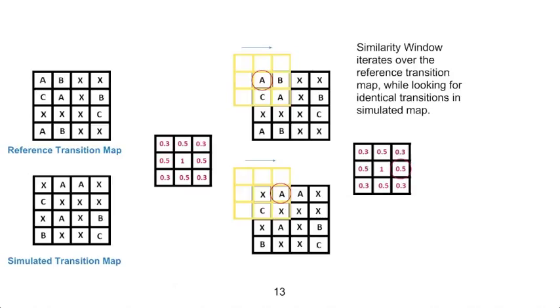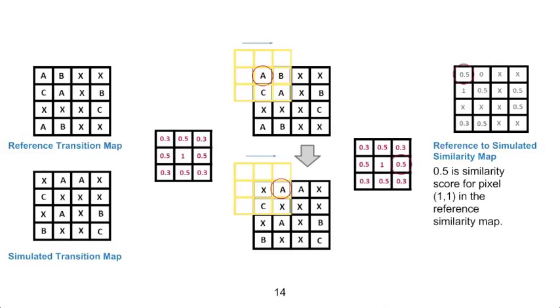The similarity window will pass over each square of the reference transition map. If that square has a transition, like this first square, then we look to see if there are any squares in the simulated transition map that have the same transition. Any such squares get a score based on the values of the similarity window, and we take the highest score, which represents the transition closest to our current pixel. Since there is an A in the simulated transition map to the lower right of our current pixel, this means our current pixel will get a value of 0.5.